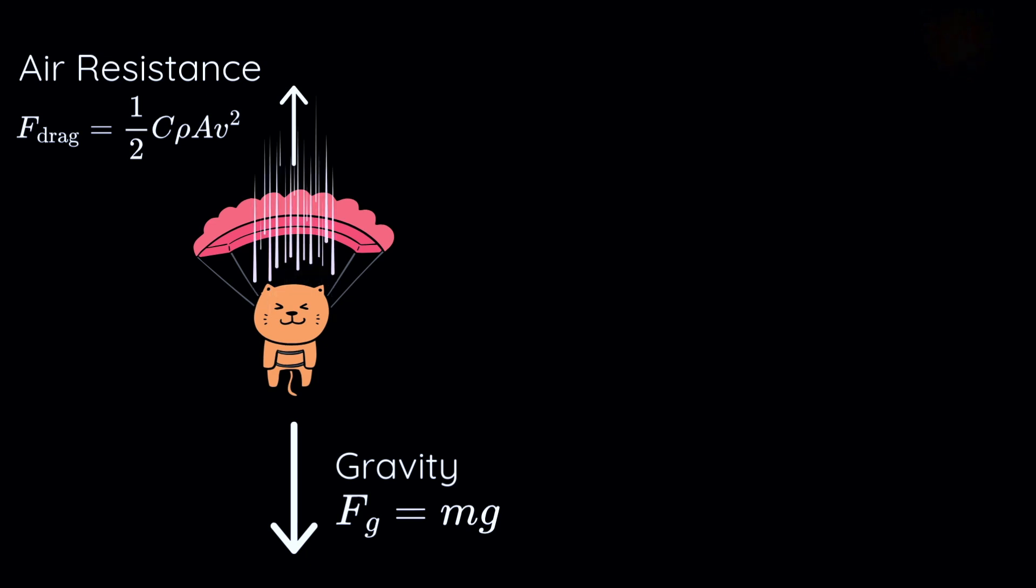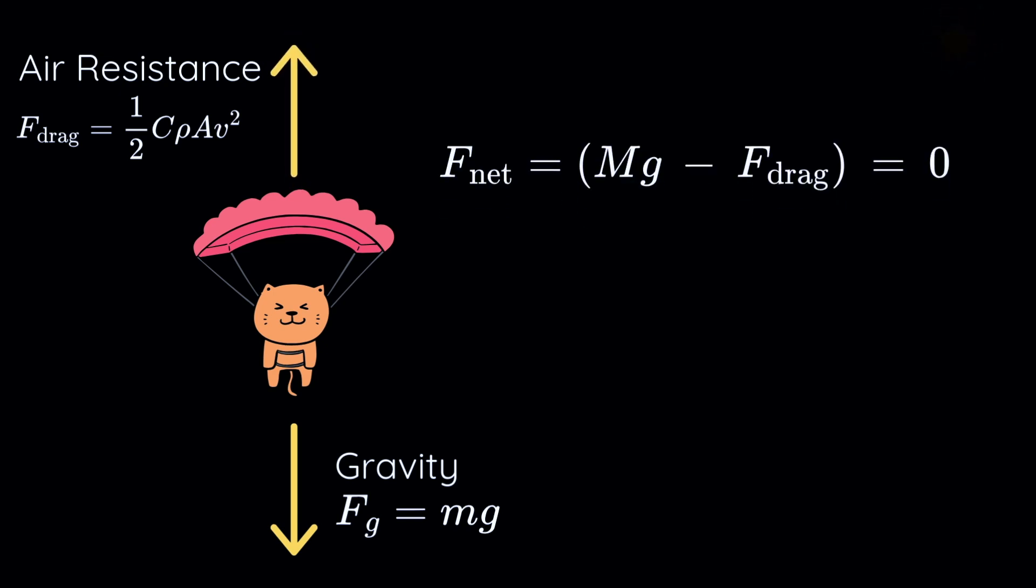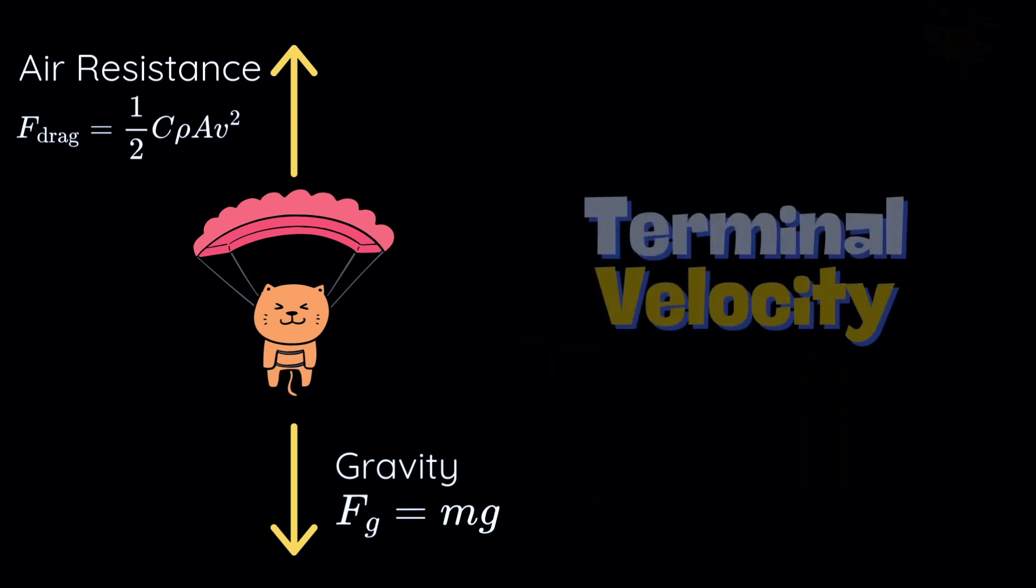Now let's bring cats back into the picture. As the cat's speed increases, so does the air resistance. Eventually, something special happens: the downward pull of gravity balances perfectly with the upward push of air resistance. At this point, the net force on the cat vanishes and it stops accelerating further. This constant speed is called the terminal velocity.